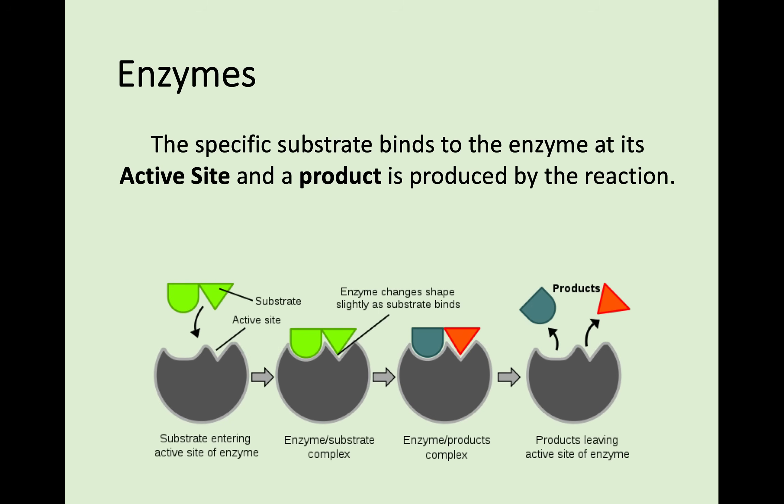When the specific substrate binds to an enzyme, it binds at a part called the active site. Looking at the diagram, where the green specific substrate is binding to the enzyme, the area where it binds is the active site — think of it as where the activity takes place, where the substrate and enzyme meet. When they join together at the active site, they form an enzyme-substrate complex, and once this reaction takes place they produce products. The two parts leaving the enzyme are the products of the reaction. You'll need to know this diagram and be able to label all of it.